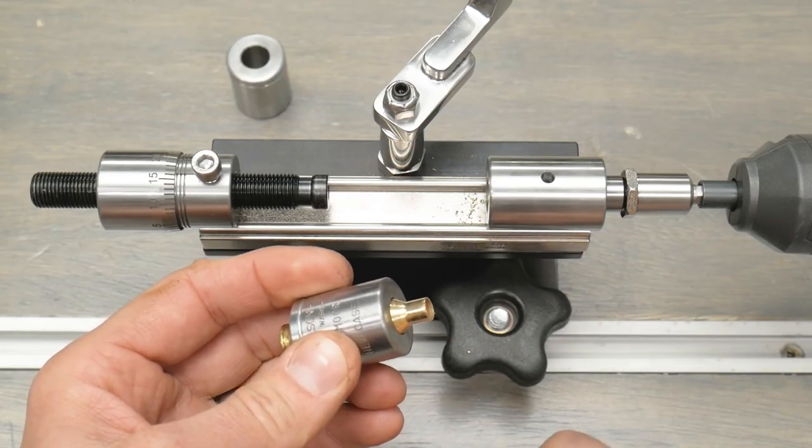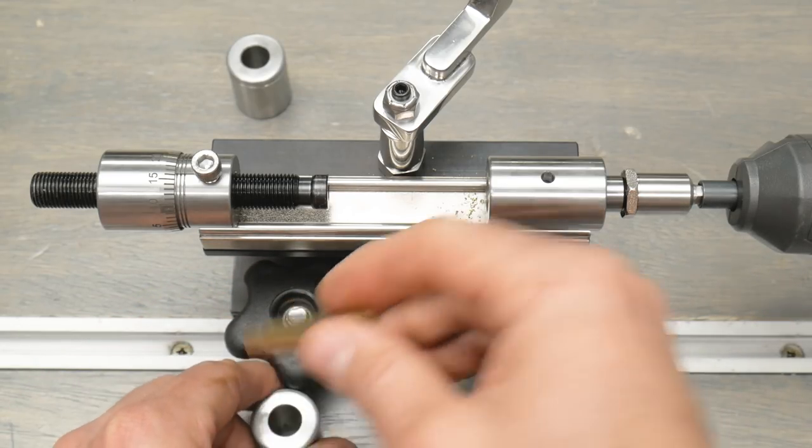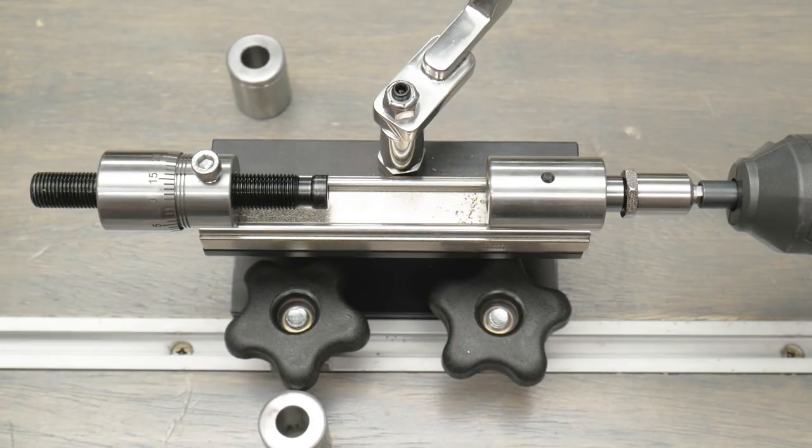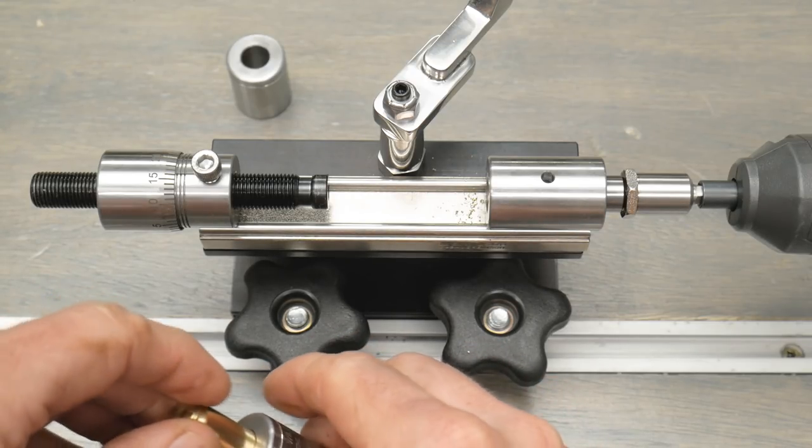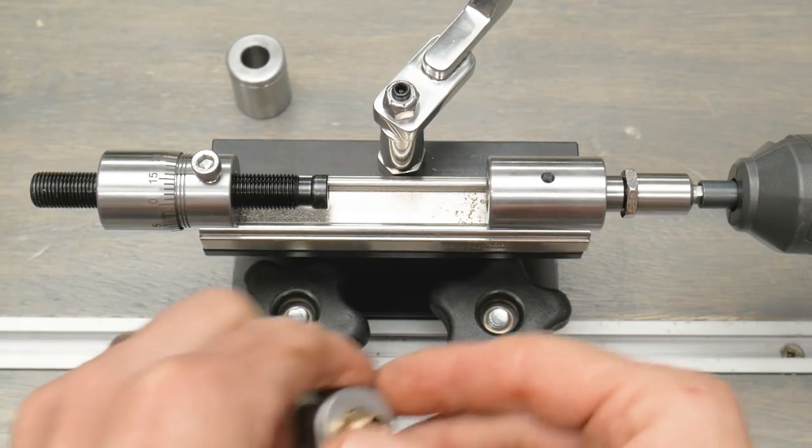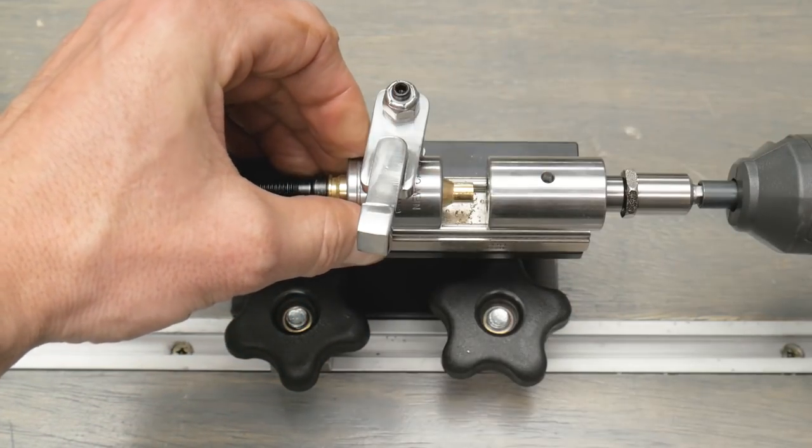Flip it, give it a quick turn. Makes the case a little bit easier to hold on to. So there we have a trimmed case. Let's take a look at another one here. And again you're going to want to check your trim to length and adjust accordingly.